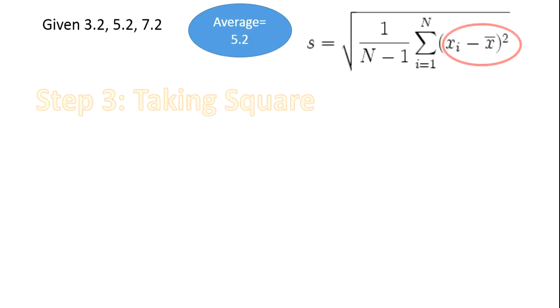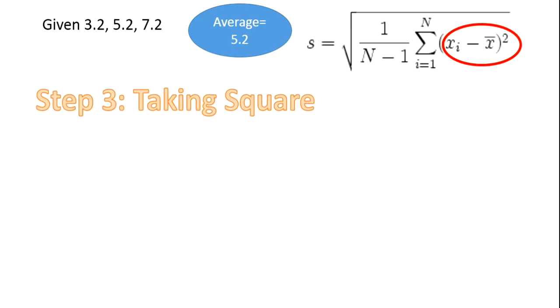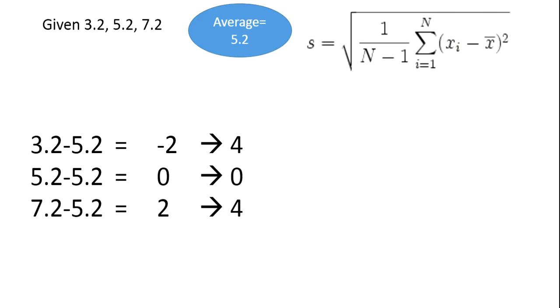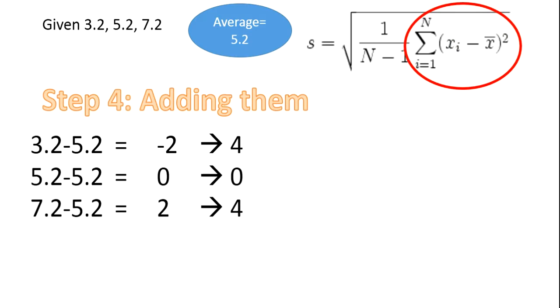Then next is taking the squares. It is to change the negative sign. That is, minus 2 becomes 4, 0 becomes 0, and 2 becomes 4. The next step is taking the sigma, that is adding them. So that will be giving 4 plus 0 plus 4, which is 8.